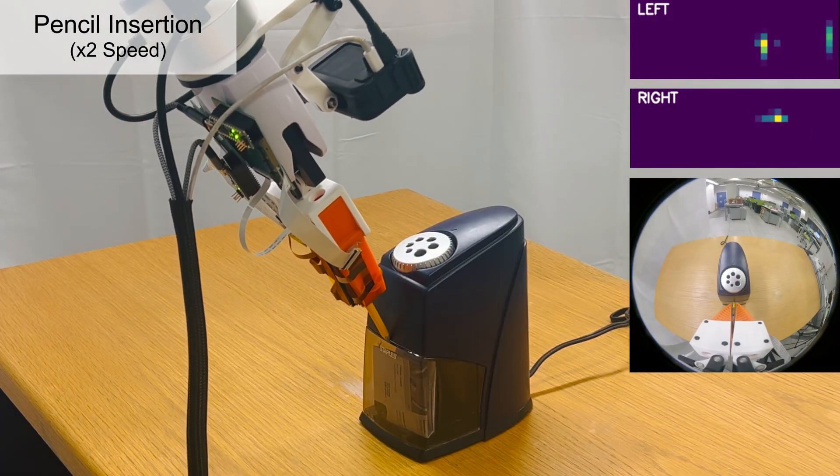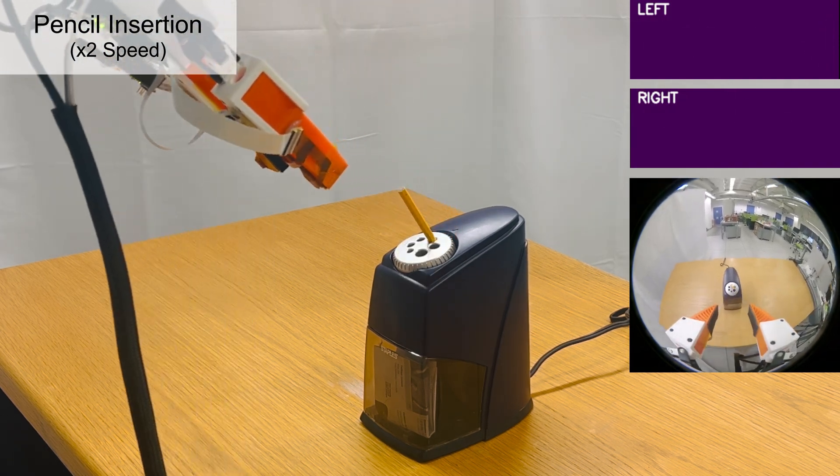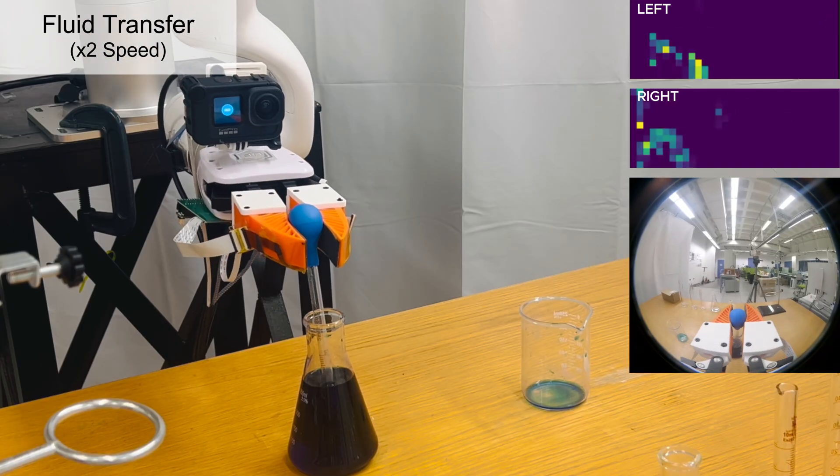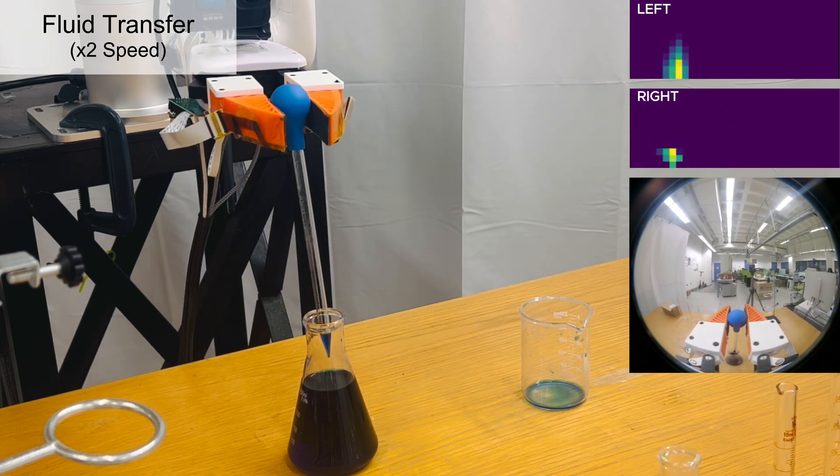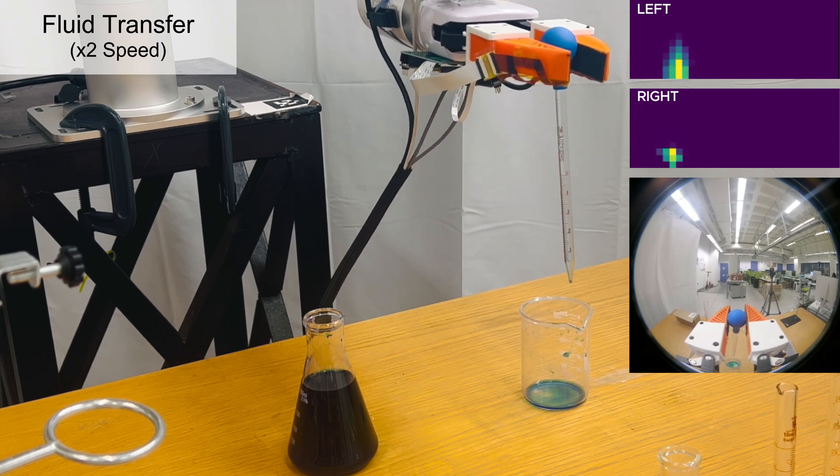Next, in pencil insertion, the policy uses touch feedback to reorient the pencil and insert it smoothly. In fluid transfer, our policy can squeeze the pipette just enough to draw up liquid and then expel it without spilling.